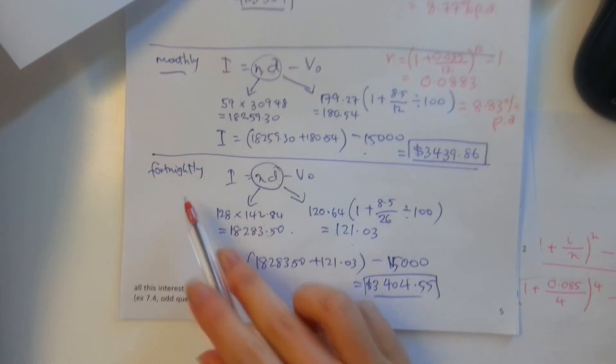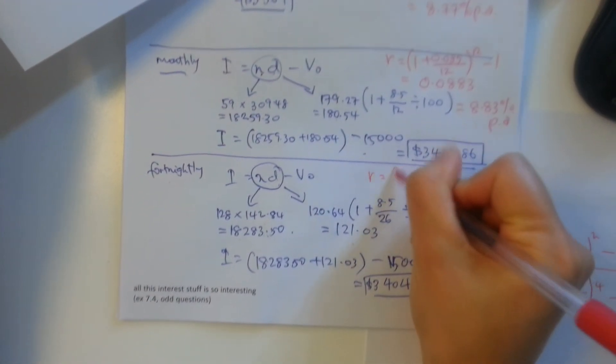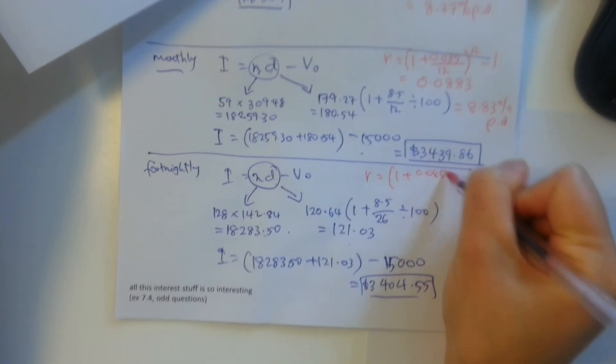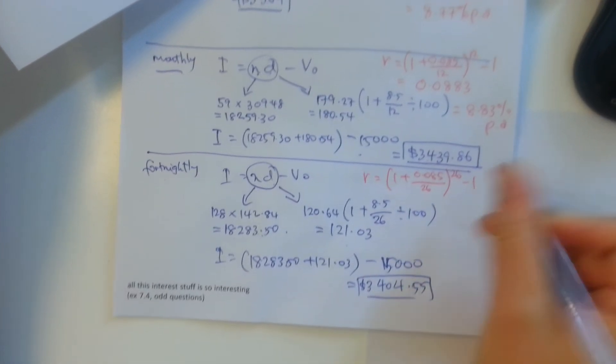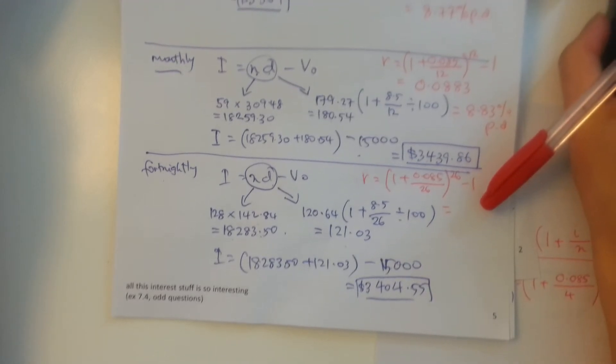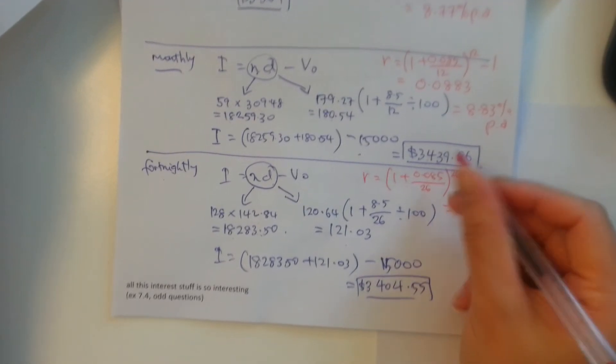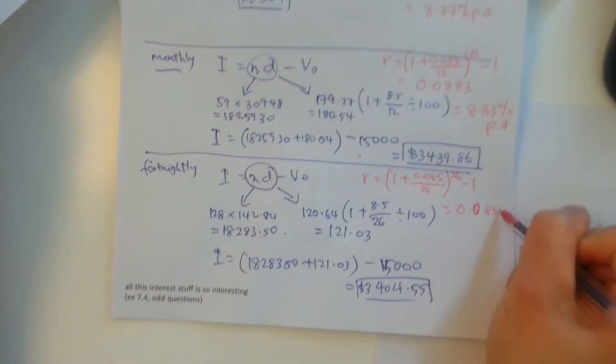Last example, fortnightly. So same thing, formula, 1 plus the nominal rate, divided by fortnightly, 26 fortnights a year, to the power of 26 minus 1, you get an answer, what was the answer, sorry, let me just get my CAS, 0.088566,